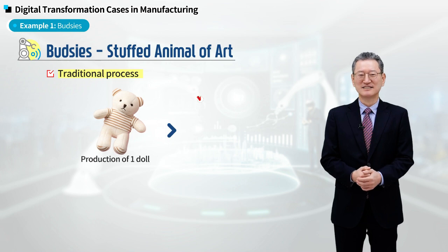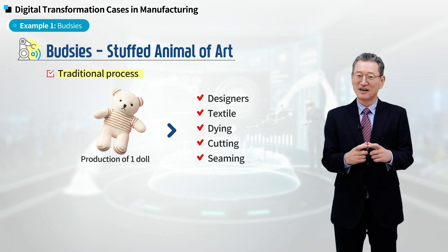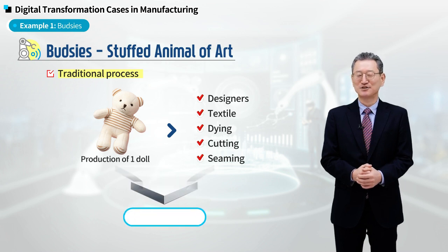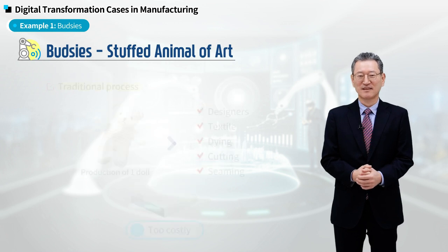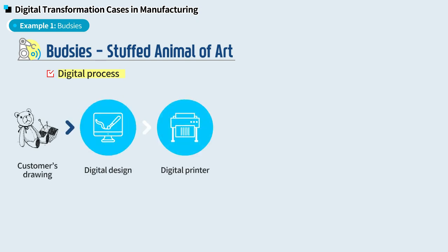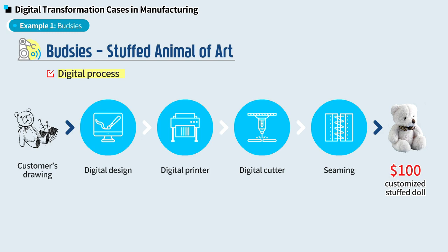To make a stuffed doll, you need to hire designers, buy textile, dye it, prepare molding for cutting the dyed textile, and seam them all. The problem is that you cannot buy one yard of textile or dye one yard of it. Making a mold to cut the textile is very expensive. So you are theoretically able to make it, but it is too costly — you cannot make it at $100. However, if you use digital technologies, you are able to make it happen: pattern it through digital design, print it using a digital printer, cut it using a digital cutter, then send it somewhere where labor cost is cheap to seam. You are absolutely able to make it happen at $100. This is how digital transformation solves the value-cost dilemma.